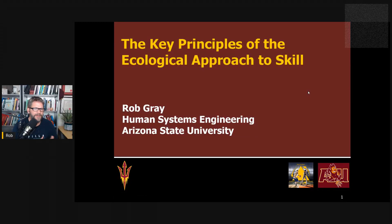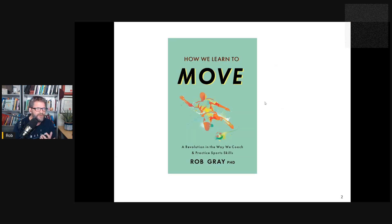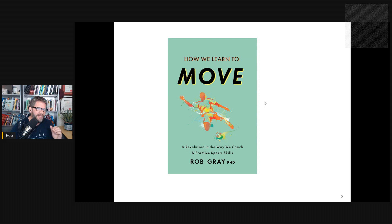Hi, everyone. This is Rob Gray from ASU and the Perception Action Podcast. In this presentation, I want to address a question that I get asked fairly often: what are the main key principles of the ecological approach to skill? This is something I tried to cover in my recent book, How We Learn to Move — audio version coming soon. In this presentation, I want to highlight what I see as the key principles and how they connect and build on each other.